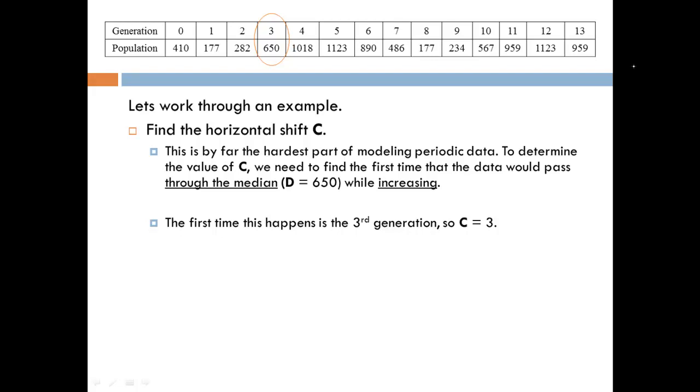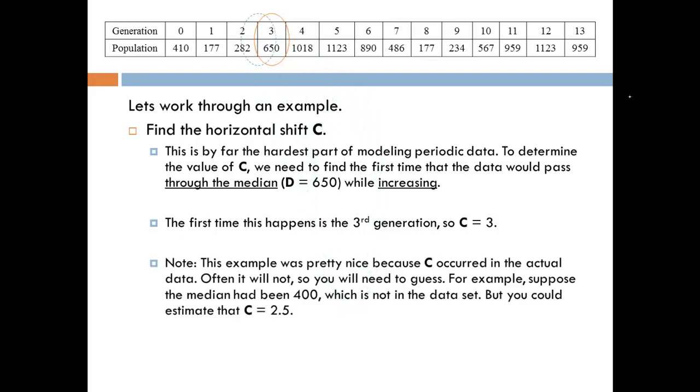Now this time it's pretty easy because that 650 was actually one of the data values, but that's not always going to be the case. So for example, say instead of 650, say the median had been just 400. The 400 is not an actual value in the data. So if we look at where the first time you're going to see 400 while the data is increasing, we have in the second generation there's 282, and in the third generation there's 650. So somewhere between 282 and 650 it's going to pass through 400, and so that would be somewhere between the second and the third generation. We're just going to make a guess or an estimate here and say that it's going to be somewhere between 2 and 3, which is 2.5. So if the median had been 400, I would have said C would have been 2.5. We're just going to make an educated guess at that point.